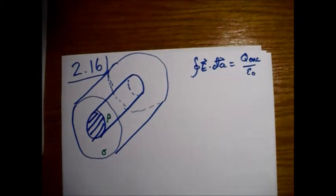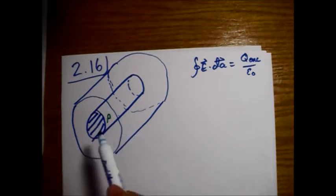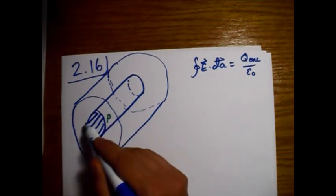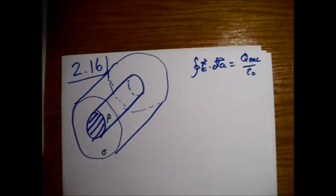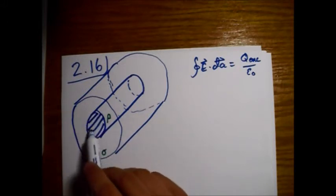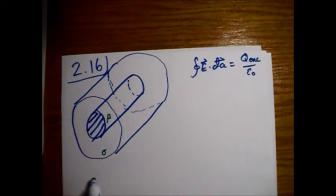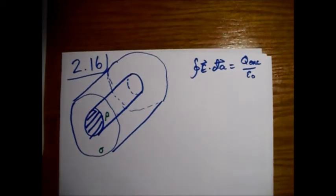We need to find the electric field in three different regions: inside the inner cylinder, between the inner cylinder and the outer shell, and outside the cable altogether.